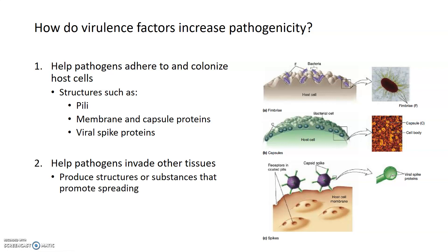Another function of virulence factors is not just promoting the initial infection by adhering and colonizing tissue, but also helping the pathogen spread or invade other tissues. Some virulence factors promote invasion by producing structures or substances that allow the pathogen to spread more easily. For example, if a pathogen is infecting the surface of your skin and wants to spread into the bloodstream, the skin epithelia sits on a basement membrane. Some pathogens create substances that can break through that basement membrane, allowing the pathogen to move from the skin surface deeper into the body.